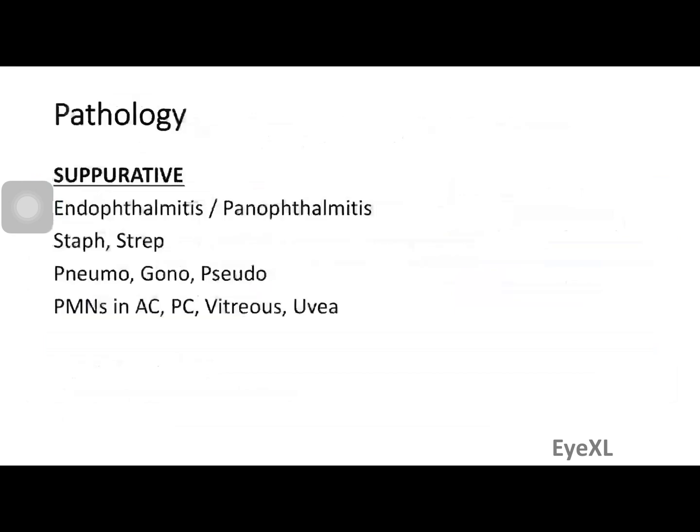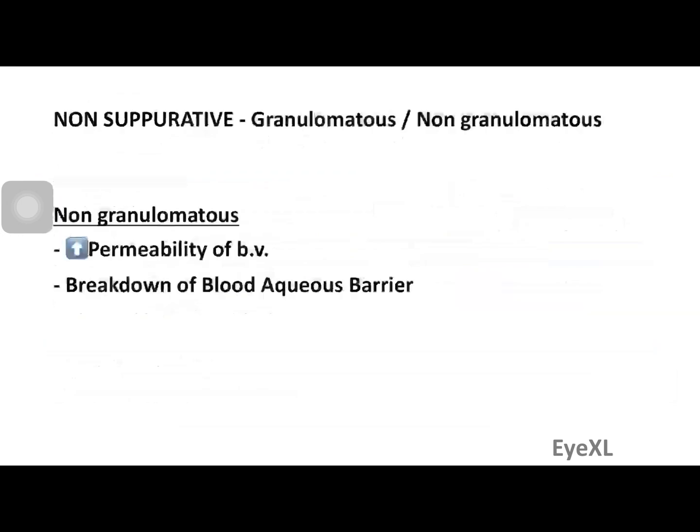Now let's look at the pathology of uveitis. The first question is whether the uveitis is suppurative or non-suppurative. Suppurative means pus-producing — classically Pneumococcus or Gonococcus — and we are talking about endophthalmitis or panophthalmitis. Other suppurative organisms include Staphylococcus and Streptococcus. Suppurative uveitis will be discussed separately; this lecture focuses on non-suppurative uveitis.